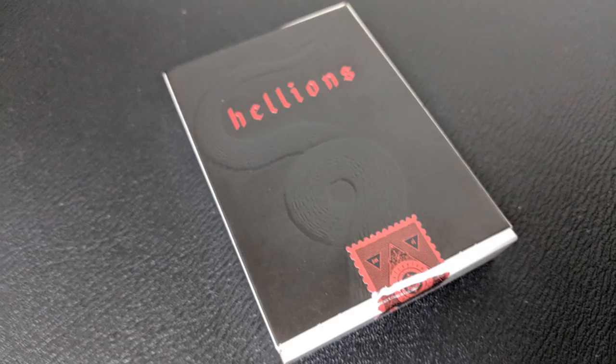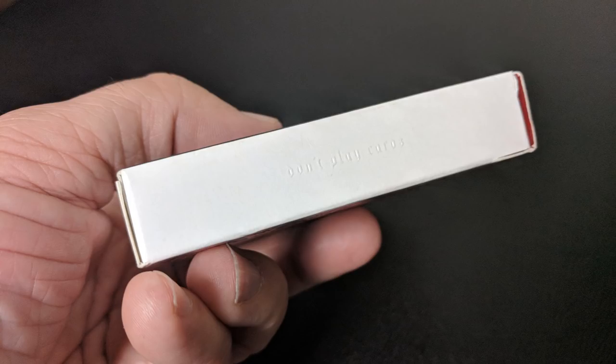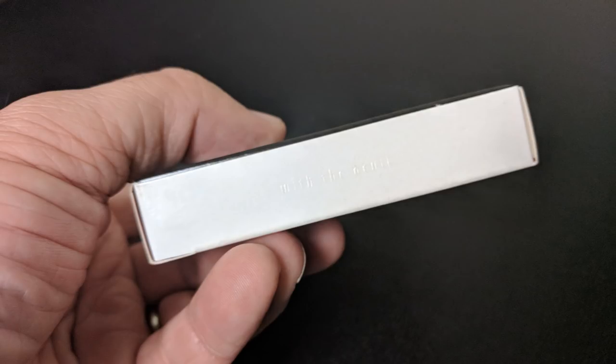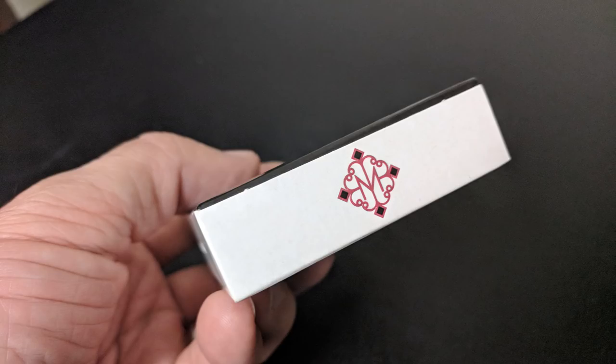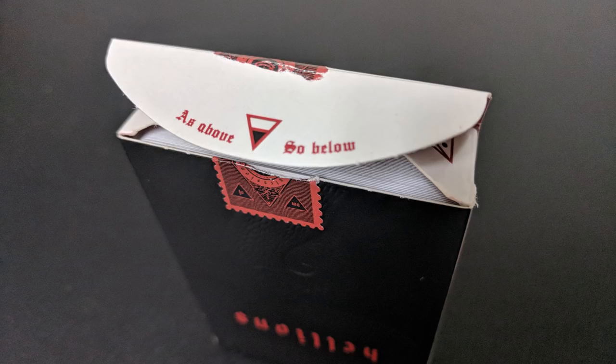The tuck case is exactly like the previous one, except it is black now. Black front says Hellions. You got that devil tail and that original tuck seal. Of course the tuck is upside down. Each side has embossed lettering. One side says don't play cards, and the other side says with the devil. And that is a song by Daniel Johnston. You got Daniel Madison's logo on the bottom in red. And then you have the back with a new red back. And these are red back cards. The original Hellions was black back.